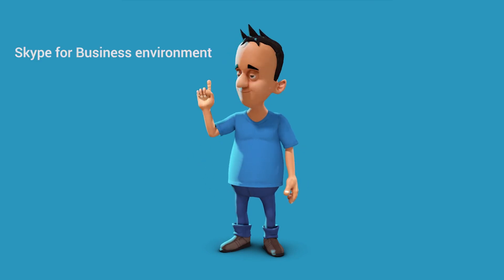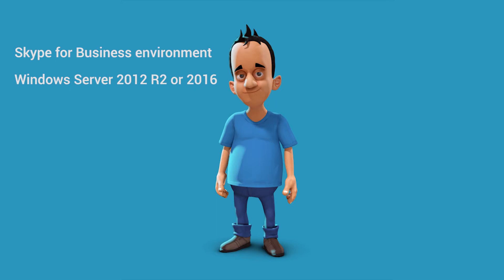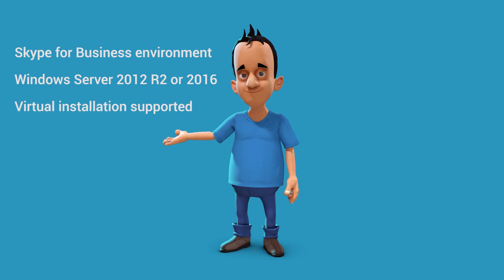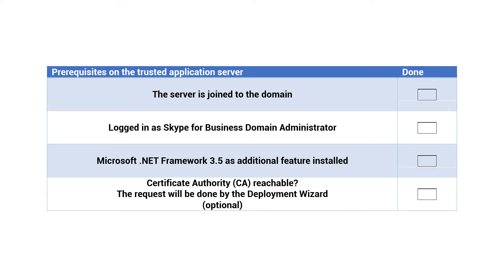Please note that you need a Skype for Business environment including a UCMA application server role and Windows Server 2012 R2 or Windows Server 2016 operating system. You can use a virtual installation also. This will be used as a trusted application server for AnyNode. We recommend checking the following prerequisites on the trusted application server.